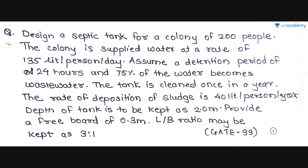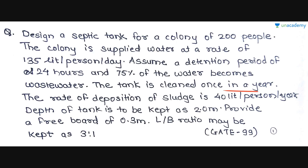The question is: design a septic tank for a colony of 200 people. The colony is supplied water at a rate of 135 litres per person per day. Assume a detention period of 24 hours and 75% of the water becomes wastewater. The tank is cleaned once in a year. The rate of deposition of sludge is 40 litres per person per year. Depth of tank is to be kept as 2 metres. Provide a free board of 0.3 metre, and L to B ratio may be kept as 3:1.